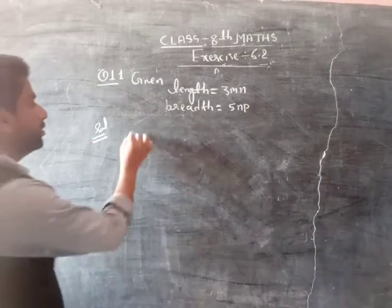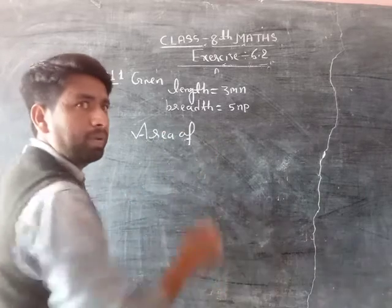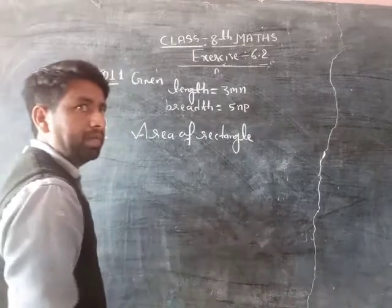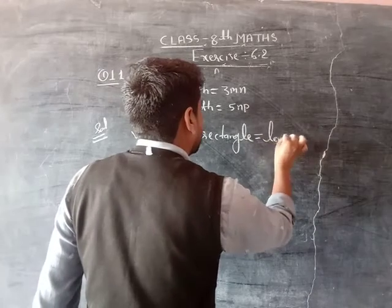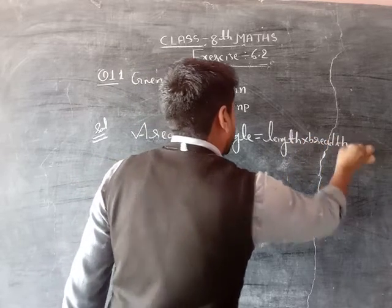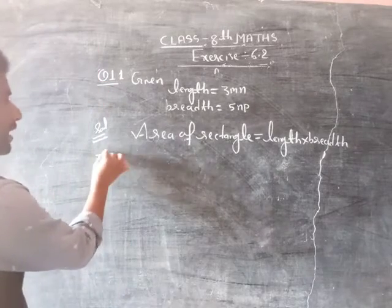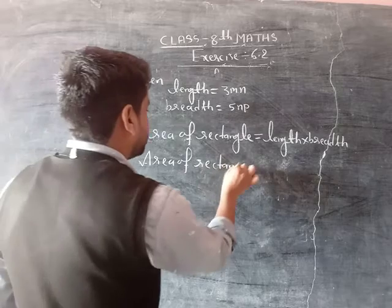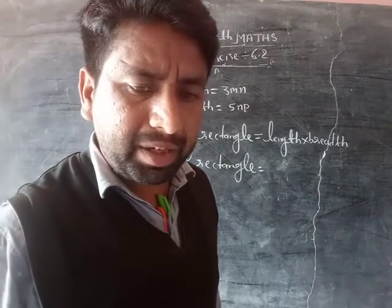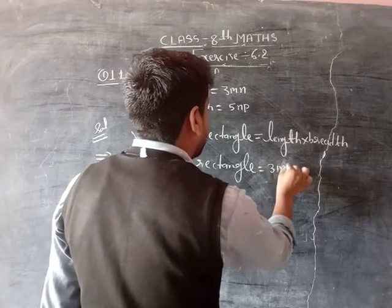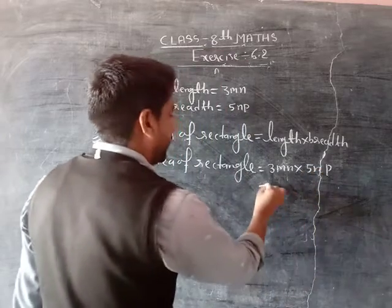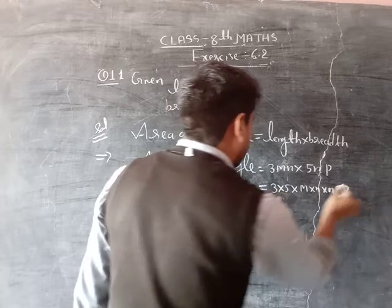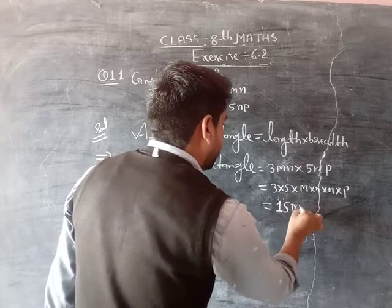The area of rectangle formula is length × breadth. So solving: 3mn into 5np gives us 3 × 5 = 15, and m × n × n × p, which is 15mn²p.